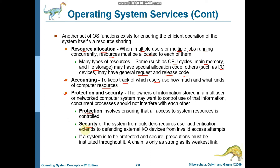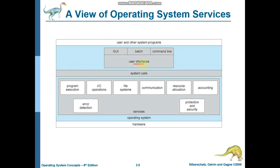Now let us look at a diagram. You can see there are user interfaces on one side, and the hardware operating system has multiple services provided. We have covered all these services: program execution, I/O operations, file system, communication, resource allocation, accounting, protection and security, and error detection.